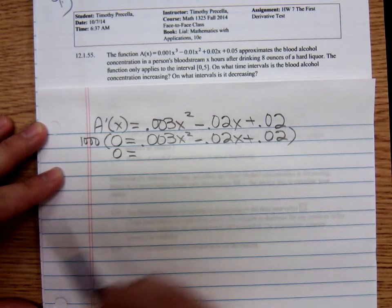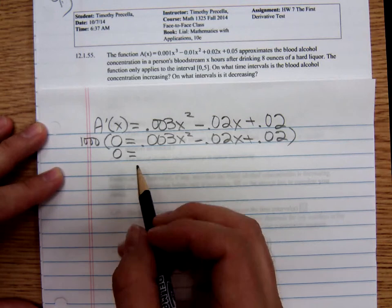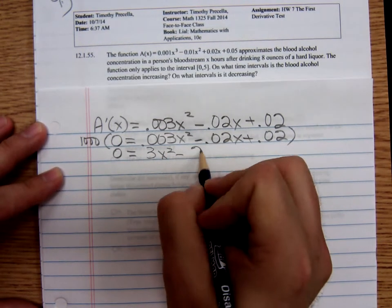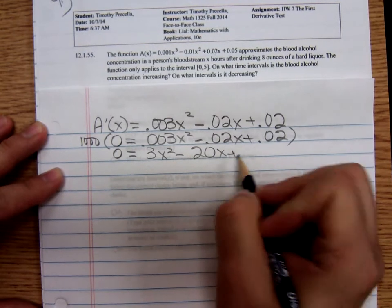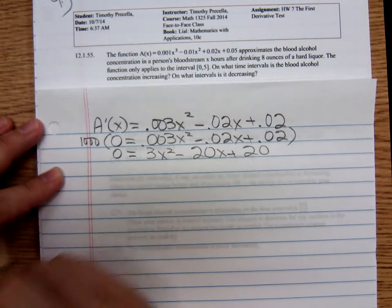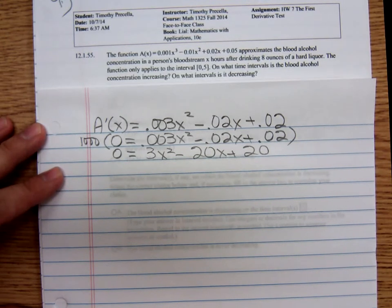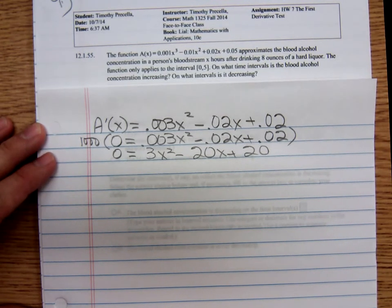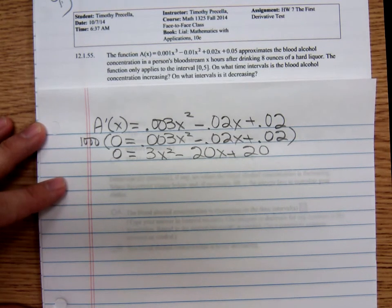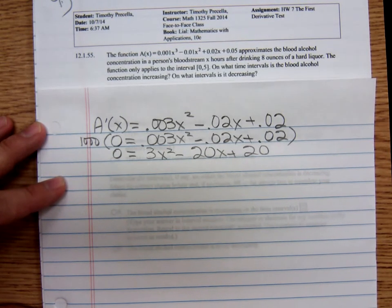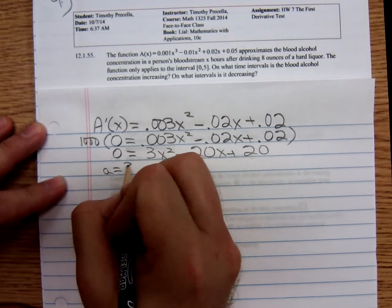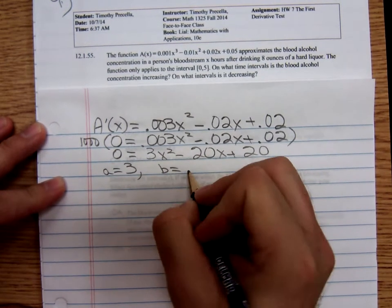Multiplying by a thousand moves the decimal points three places so that becomes just 3x² minus 20x plus 20. So I can already tell this is not factorable, so if I were you I would use the quadratic formula. I guess you could complete the square if you wanted to, I don't know why you would want to, but I guess you could.